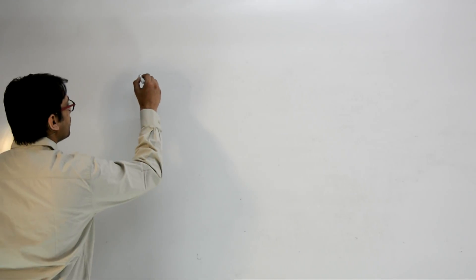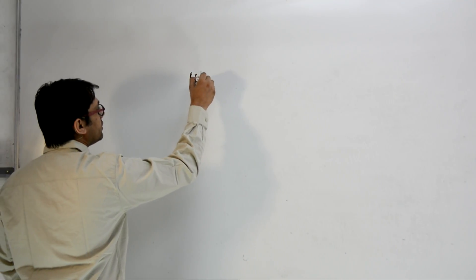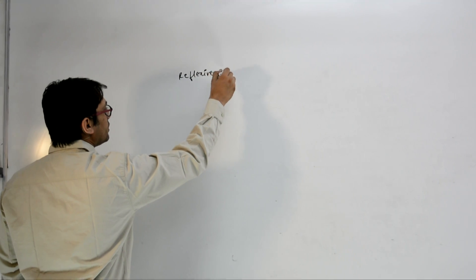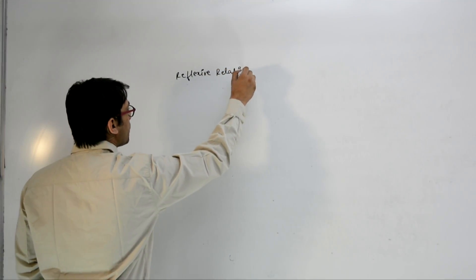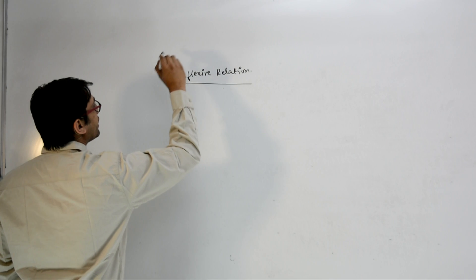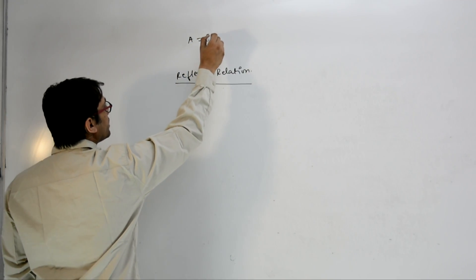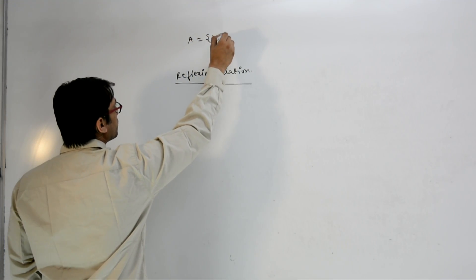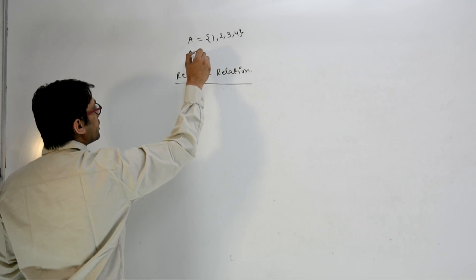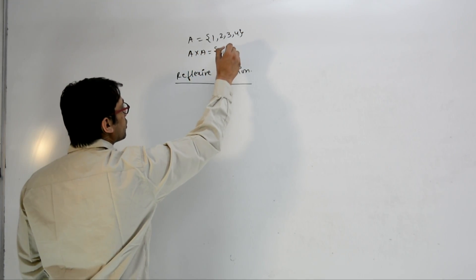The first kind of relation we are going to study is the reflexive relation. We will define all relations over set A. If the set A contains 1, 2, 3, 4, then we know what A×A is. A×A is going to contain (1,1)...